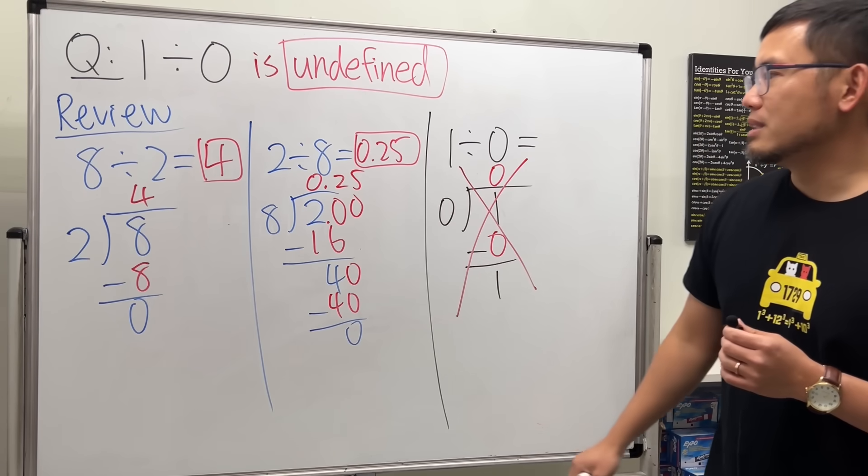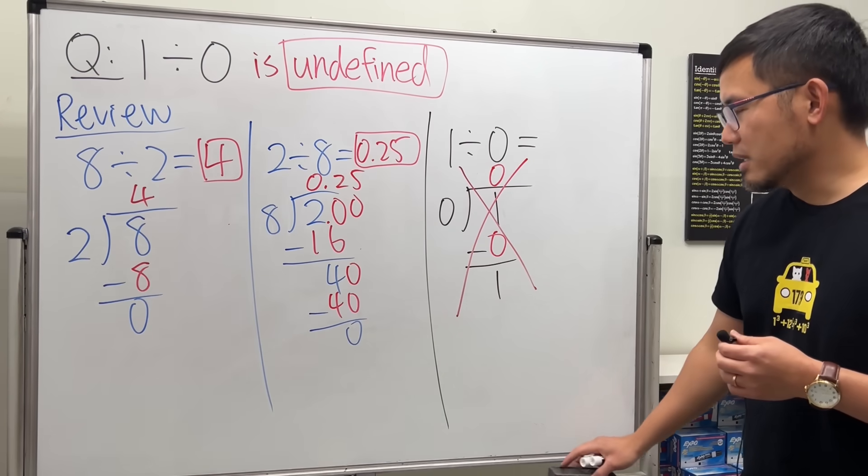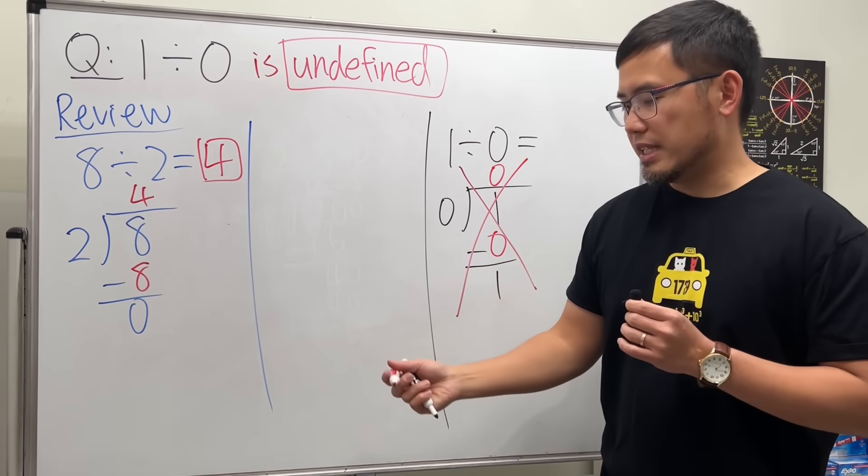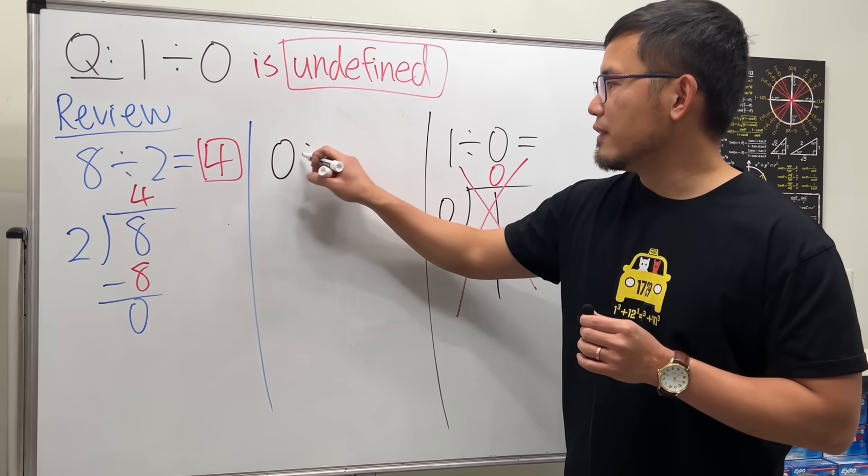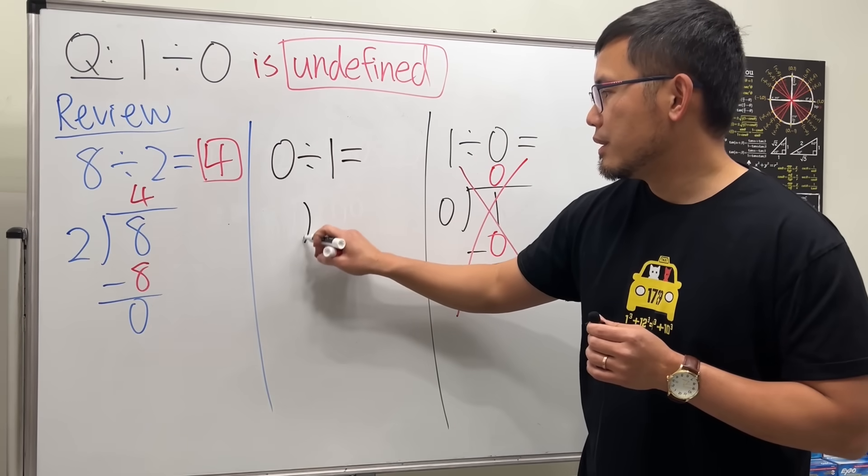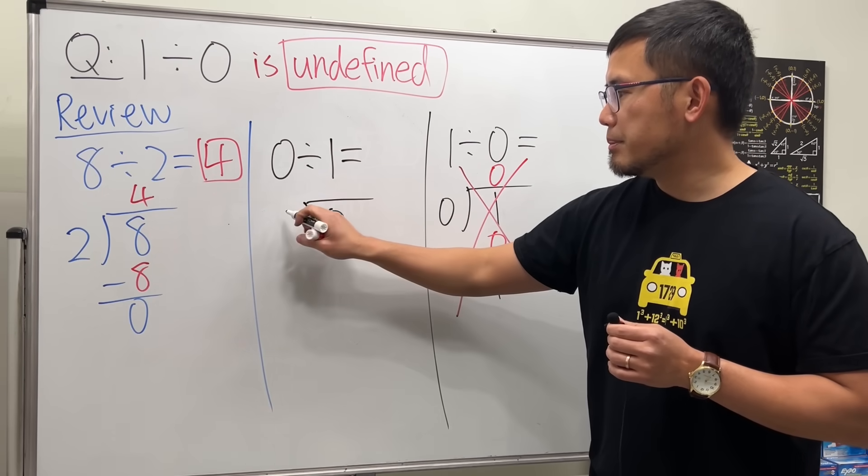Well, some people get mixed up with undefined or 0. I think the reason because of this. If we have this question instead, 0 divided by 1. Well, long division, you put down the first number inside, put down the second number on the outside.